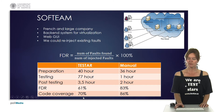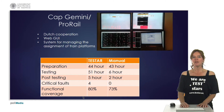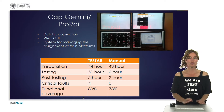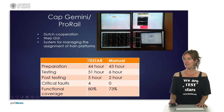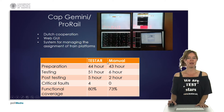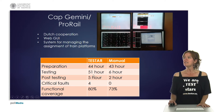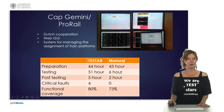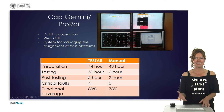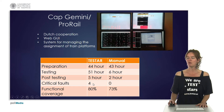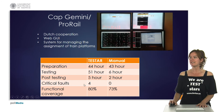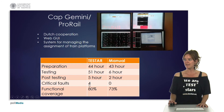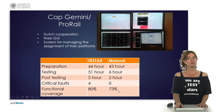We did it again at another company in the Netherlands - a Dutch cooperation between Capgemini and ProRail. They have a web GUI for managing the assignments of train platforms. Setting up Testar costed 44 hours and the manual test suite was estimated to have costed 43 hours to set up. Automated testing with Testar was 51 hours while manual was 6 hours. Post-testing was 5 hours for Testar compared to 2 hours manually. We found 4 critical errors that their manual test suite did not find. Even more impressive is that with Testar we covered 80% of the functionalities, while their manual test suite only covered 73%.